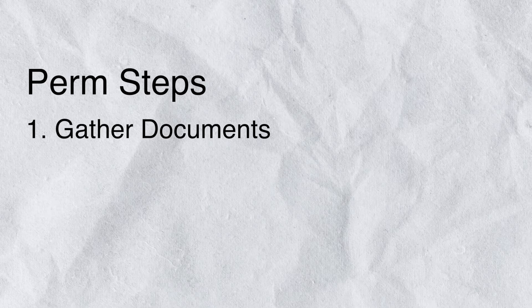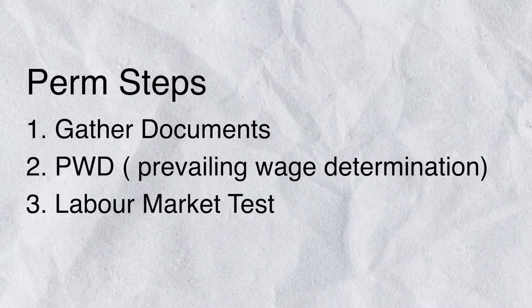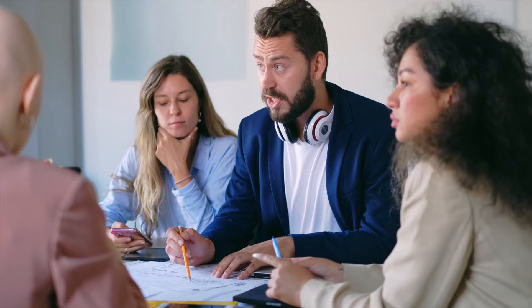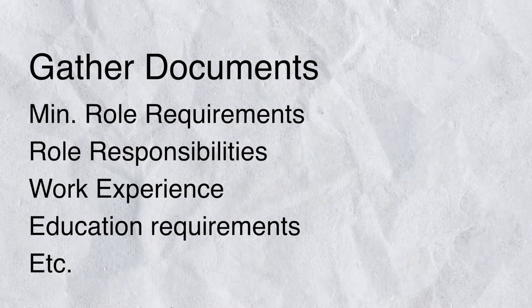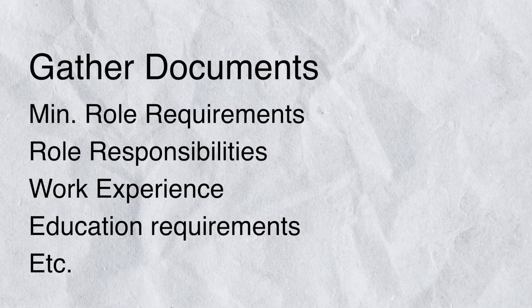The PERM stage can be broken down into four steps. Number one is gathering your documents. Number two is getting a prevailing wage determination. Number three is doing a labor market test. And number four is actually filing the PERM itself. In step one, you, your manager, your lawyer, and your employer all work together to create a package that you'll send to the US Department of Labor. This package details information about your job, minimum role requirements, minimum education requirements, role duties, etc. You'll also have to provide work experience and reference letters of employment authorization from all previous employers.